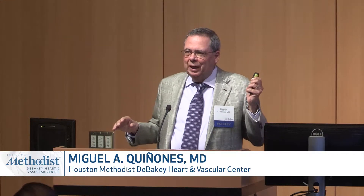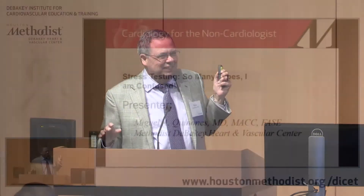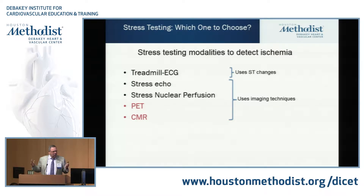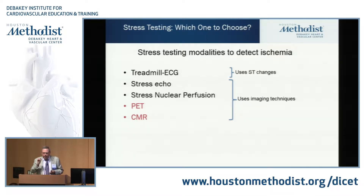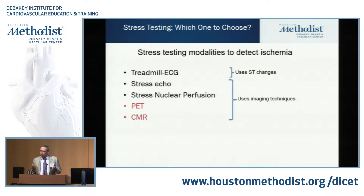Okay, let's dive right into it. Sometimes we, the cardiologists, are also confused — sometimes you don't know which stress test to order. The tests potentially available are the treadmill, which uses ST changes, then stress echo and stress nuclear that use imaging techniques. Newer options are PET and cardiac MRI, but those are unique situations — I'm not going to address them today because it's not the bread and butter of what we do every day. We'll concentrate on the first three.